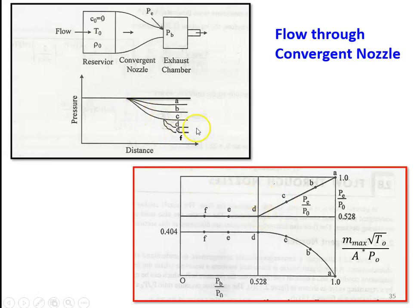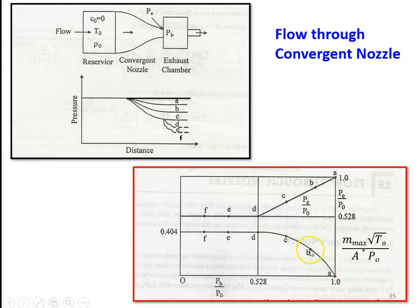At curve D, by regulating and increasing the mass flow rate, we reach the critical pressure ratio PE/P0 equal to 0.528. At this point D, the mass flow rate is maximum. From point A, the mass flow rate is minimum; by increasing the flow rate through B and C, the pressure ratio reduces and mass flow rate increases. At the critical pressure ratio of 0.528, the mass flow rate is maximum, and then the mass flow rate remains constant for any further regulation. The PE/P0 value also remains constant — it is horizontal with no change.